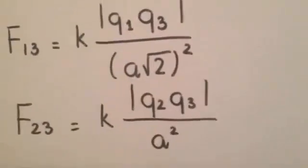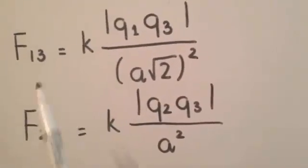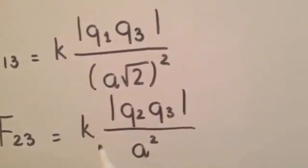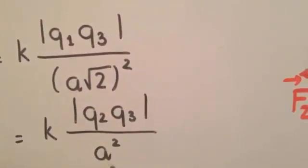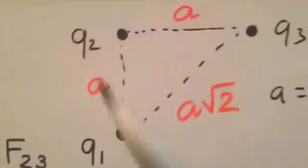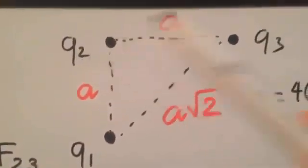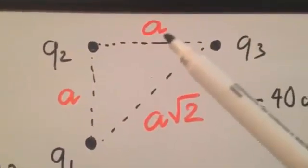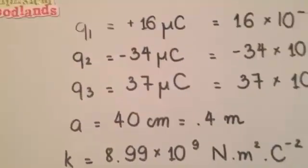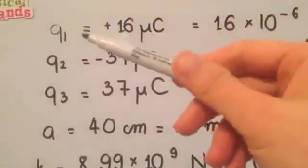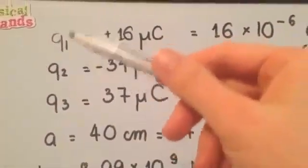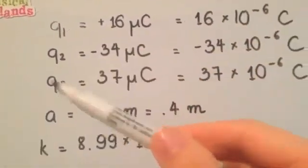Similarly, we can get the magnitude of F23 equals K times the absolute value of Q2 Q3 divided by A squared. The distance between Q2 and Q3 is only A. It's time for plugging in the numbers. We are given the values for Q1, Q2, Q3, A, and K.